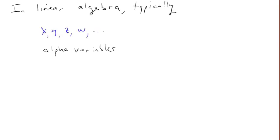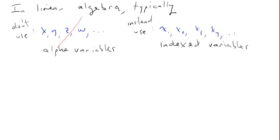In linear algebra, we typically don't use alphabetic variables such as x, y, z, and w. Instead, we use indexed variables such as x1, x2, x3, x4. This allows us to use as many variables as we like. It also helps us arrange our equations and systems in a more orderly fashion. For example: 4x1 minus 3x2 plus 8x3 is equal to negative 5.